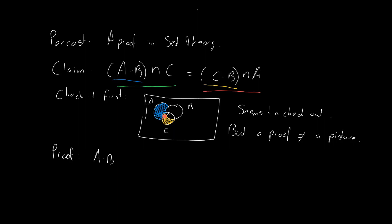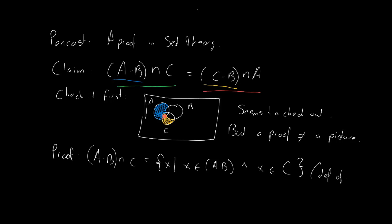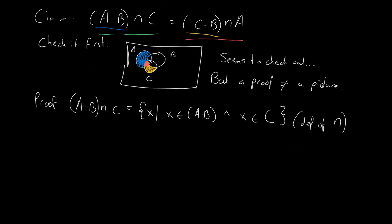How does that work? Let's see what the set (A minus B) intersected with C actually is. It's all of the x such that x is in (A minus B) and x is also in C — this is the definition of intersection. What does A minus B mean? It means x must be an element of A and x should not be an element of B. And x of course should still be an element of C. This is the definition of set minus.